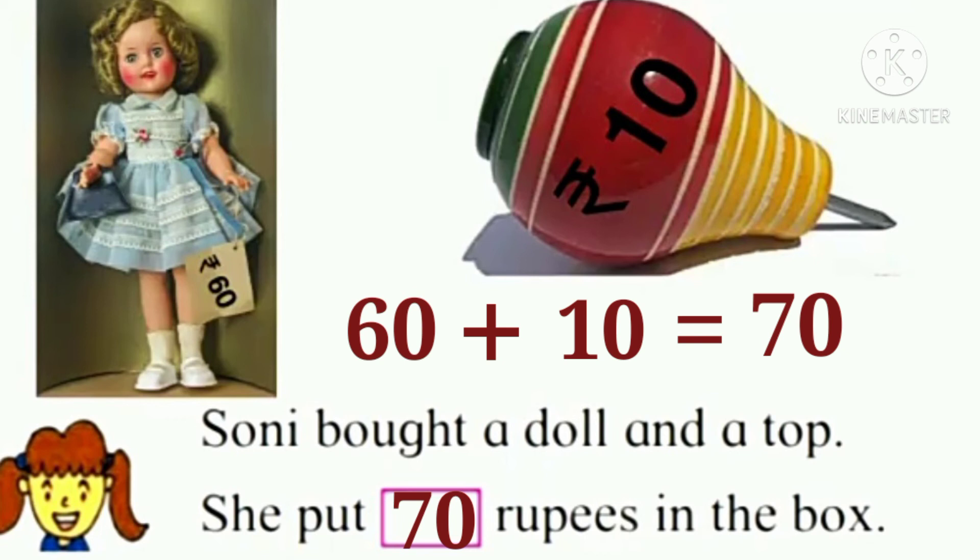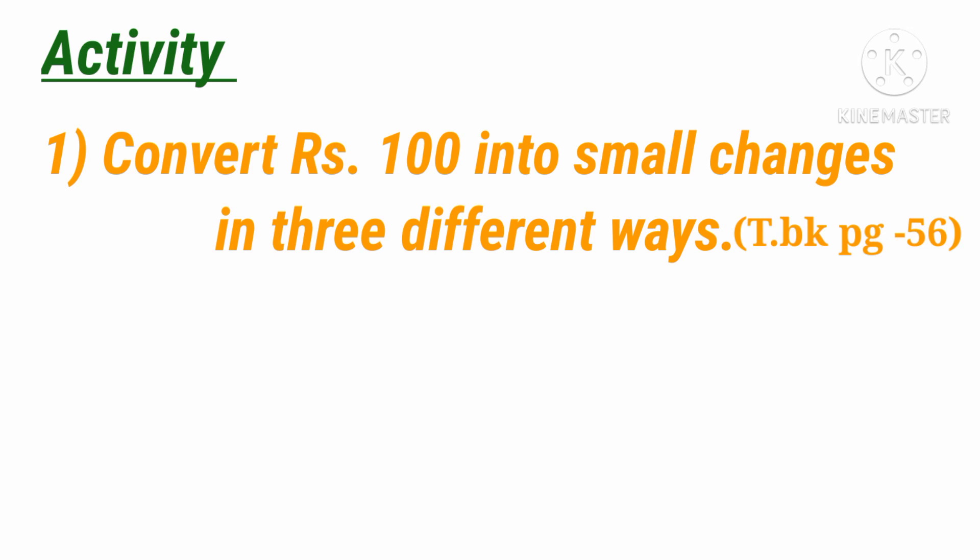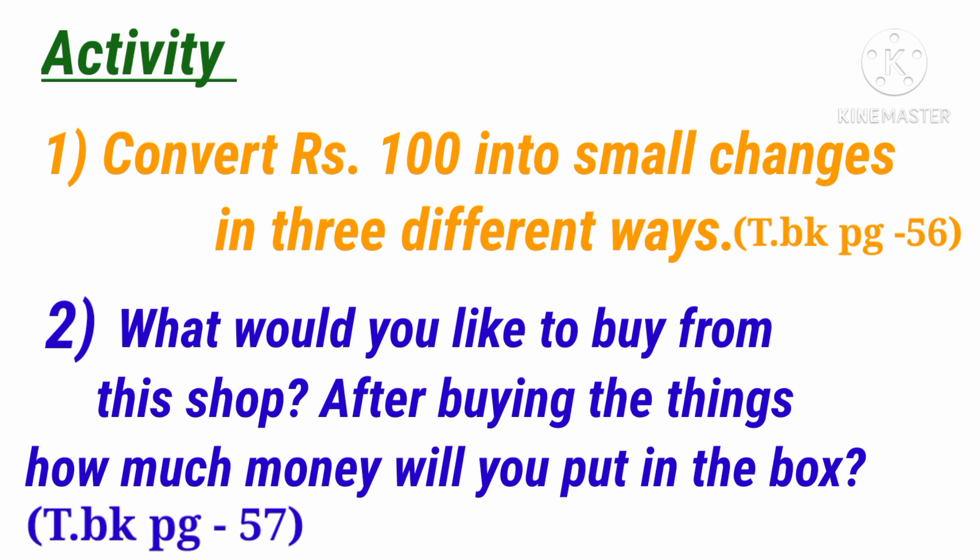Understood children? Today I am giving you some activity to do. First, convert rupees 100 into small changes in three different ways — you have to show a change of rupees 100 in three different ways. Second, what would you like to buy from this shop? After buying the things, how much money will you put in the box? You can buy anything from the given shop, and then calculate the total price.